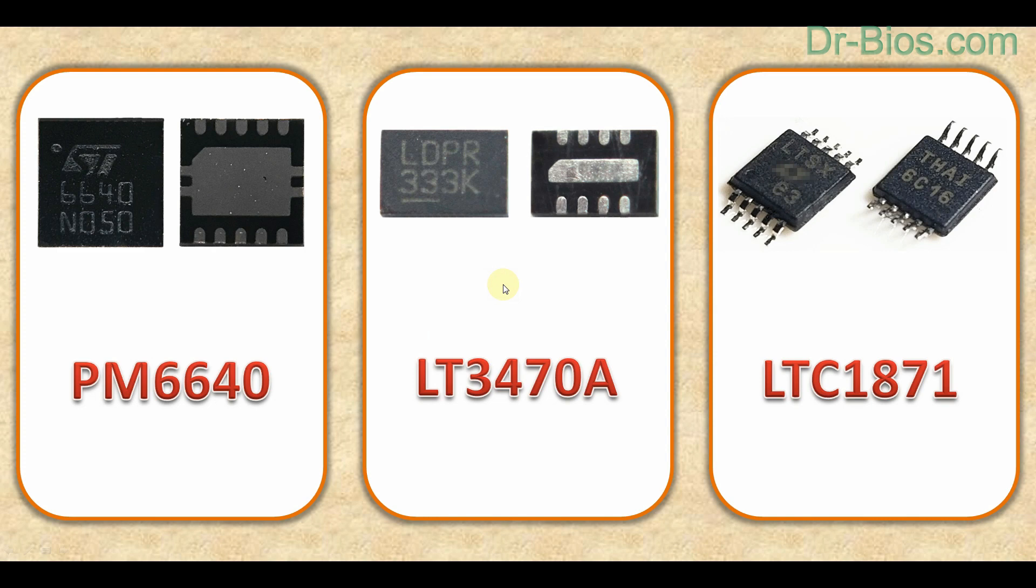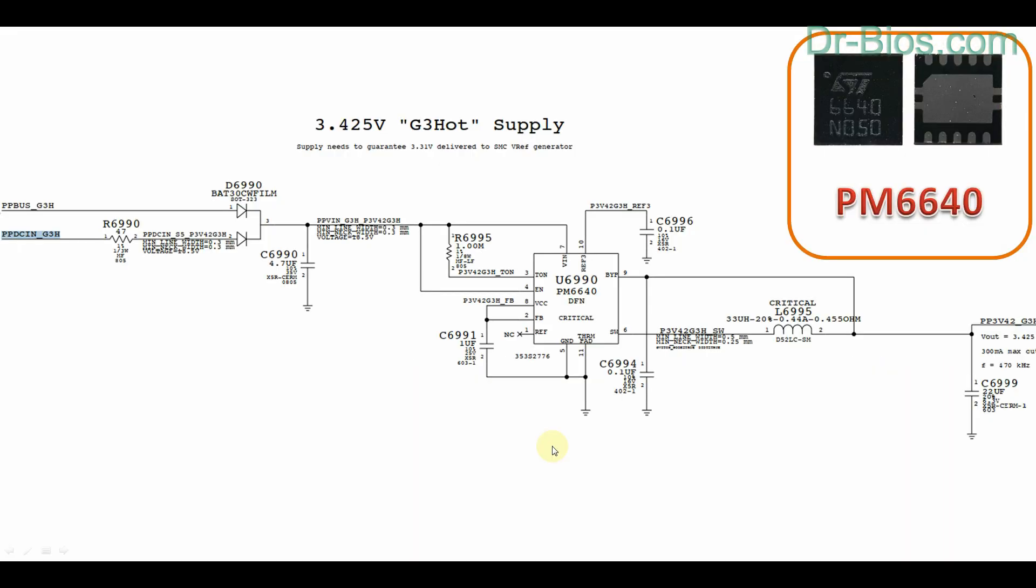The first one is PM6640 IC. This 11-pinned IC has a small PWM circuit inside it. At first, the input voltage that can be sent from device's battery or adapter enters pin VIN, TUN and enable pins. This means by entering voltage to VIN pin, the IC starts working.